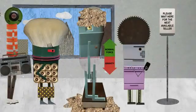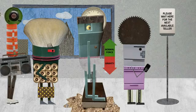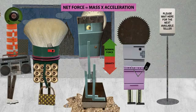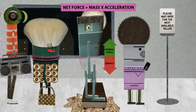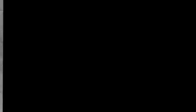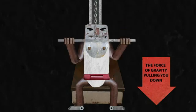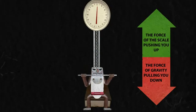Since you're just standing there on the scale, you're not moving. Therefore, you're not accelerating. Newton's second law of motion — net force equals mass times acceleration — tells us that if the acceleration equals zero, the net force must equal zero, which means the force of gravity pulling you down must be equal to the force of the scale pushing you up.